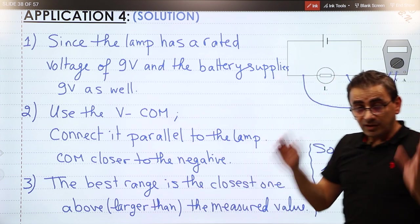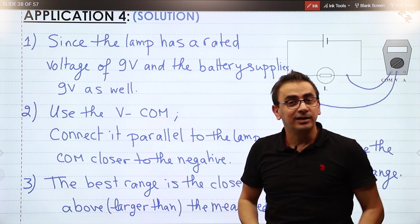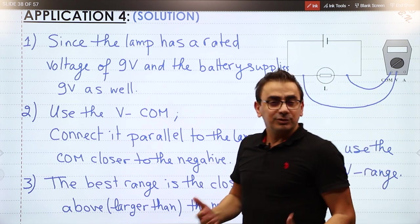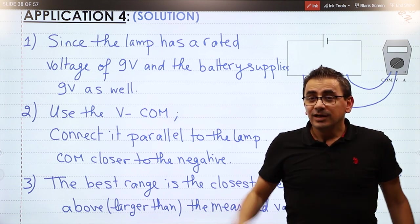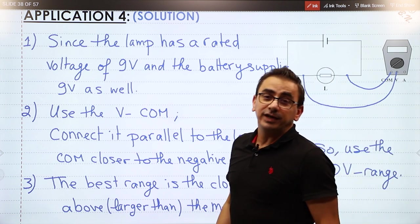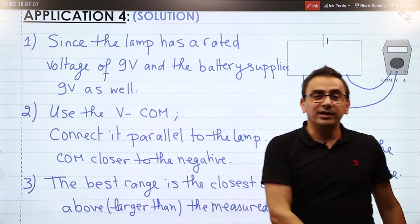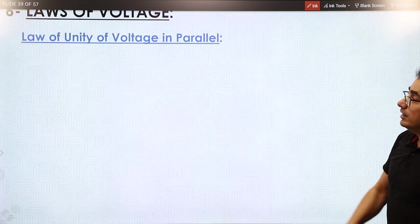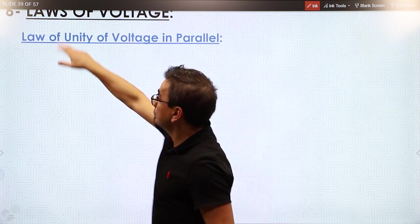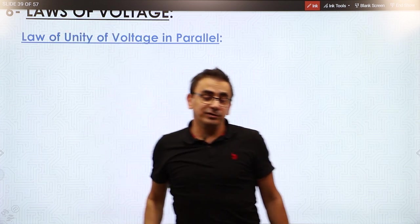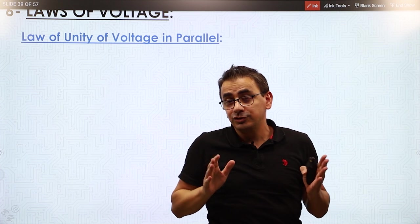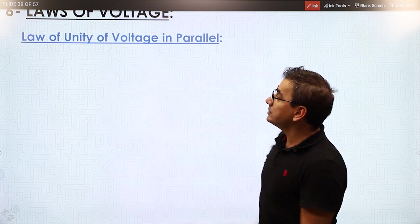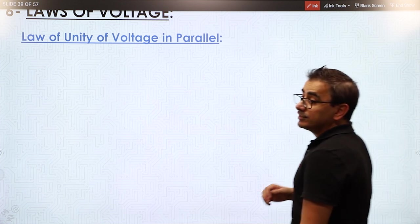This exercise focused on the main ideas from parts one and two - part one covered generalities and part two covered measuring tools. Now we move to the laws of connection, series and parallel. The first section is the laws of voltage - how does voltage behave in different types of circuits? First: the law of unity of voltage in parallel.